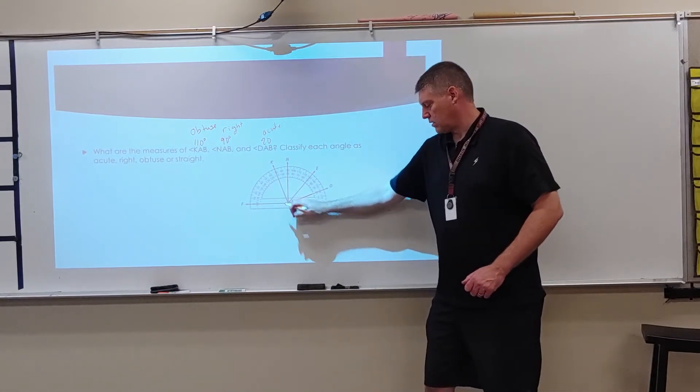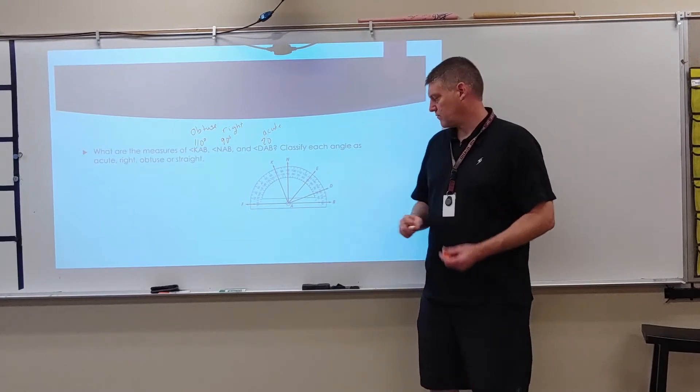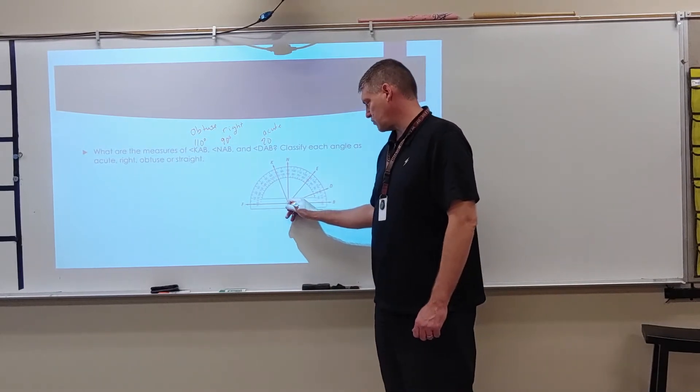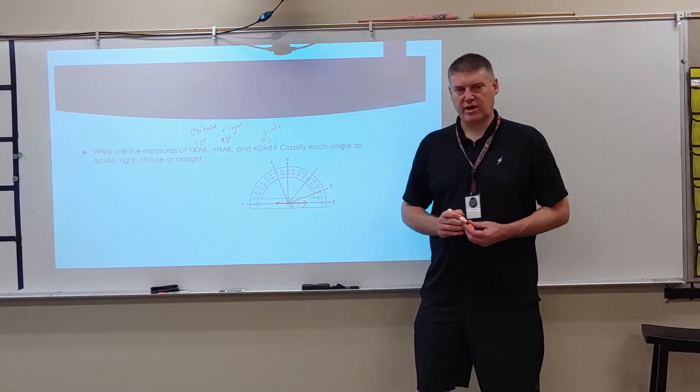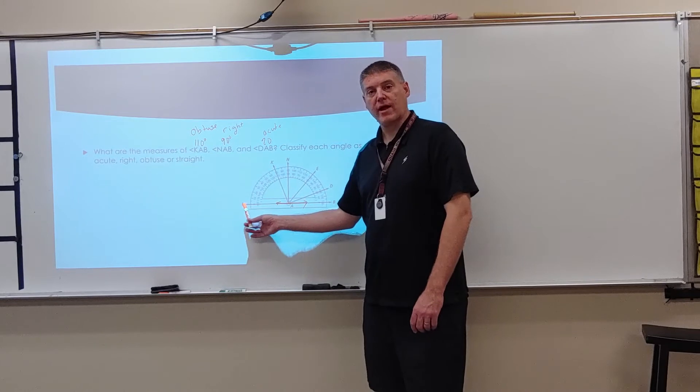Now, what angle would be a straight angle? So if I look down here, and I want to see a straight angle here. So there's my straight angle. So my straight angle would be B, A, F, or F, A, B.